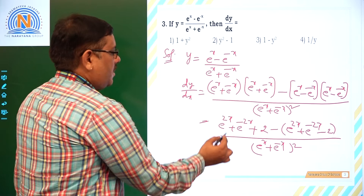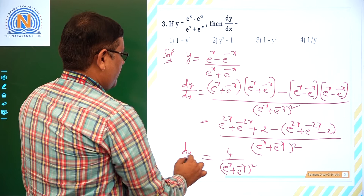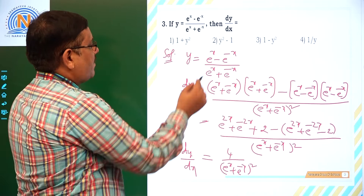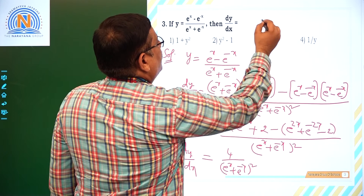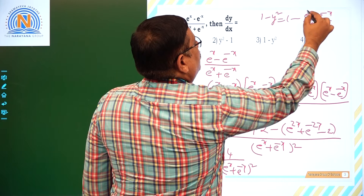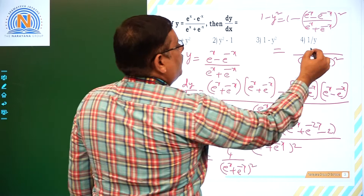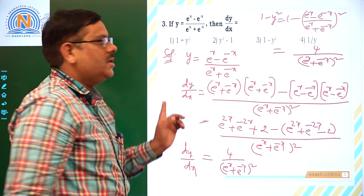So dy/dx = 4 / (eˣ + e⁻ˣ)². The options are in terms of y². Let us compute 1 − y²: that is 1 − [(eˣ − e⁻ˣ) / (eˣ + e⁻ˣ)]². Taking the common denominator (eˣ + e⁻ˣ)², the numerator becomes (eˣ + e⁻ˣ)² − (eˣ − e⁻ˣ)², which equals 4. So 1 − y² equals 4 / (eˣ + e⁻ˣ)², which equals dy/dx. Therefore dy/dx = 1 − y², the third option.